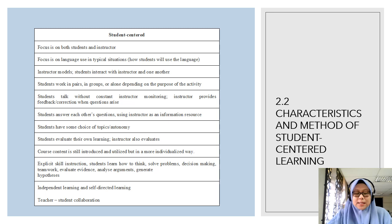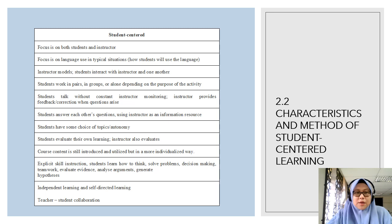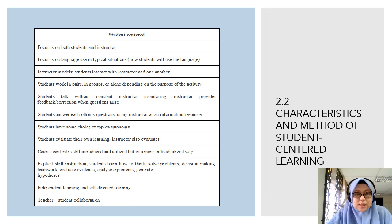The second part covers characteristics and methods of student-centered learning. Student-centered teaching is an approach increasingly being encouraged in education, focusing more on the process of learning compared to listening to instructions only. There are few characteristics and approaches discussed by the researchers. These include: focus on both students and instructor; focus on language use in typical situations; instructor models, students interact with instructor and one another; students work in pairs, in groups, or alone depending on the purpose of the activity; students talk without constant instructor monitoring; students answer each other's questions using instructor as an information resource; students have some choice of topics autonomously; students evaluate their own learning; instructors also evaluate; and course content is introduced and utilized in a more individualized way.